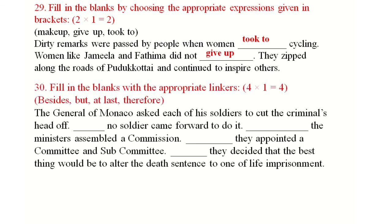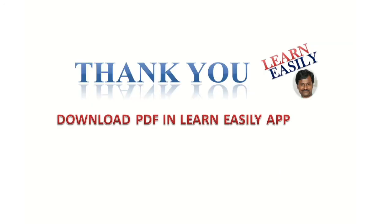Next question — fill in the blanks with appropriate linkers. The general of Monaco asked each of his soldiers to cut the criminals' heads off, but no soldier came forward to do it. Therefore, the ministers assembled a commission. Besides, they appointed a committee and subcommittee. At last, they decided that the best thing would be to alter the death sentence to one of life imprisonment. This is the linkers section for 4 marks.